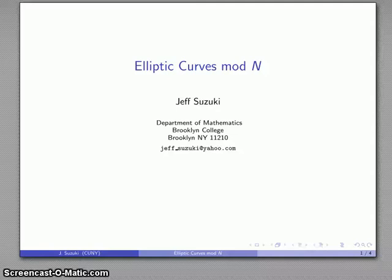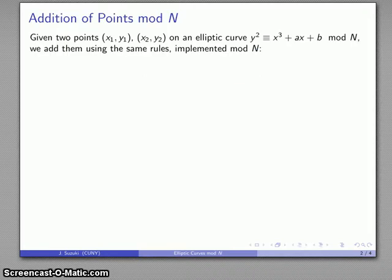Once we have an algebraic formulation for the addition of points on an elliptic curve, we can then consider what happens when we try to do this mod n. And so again, let's consider two points that are on an elliptic curve. What we'll do is we'll use exactly the same rules, but this time we're going to use mod n arithmetic.